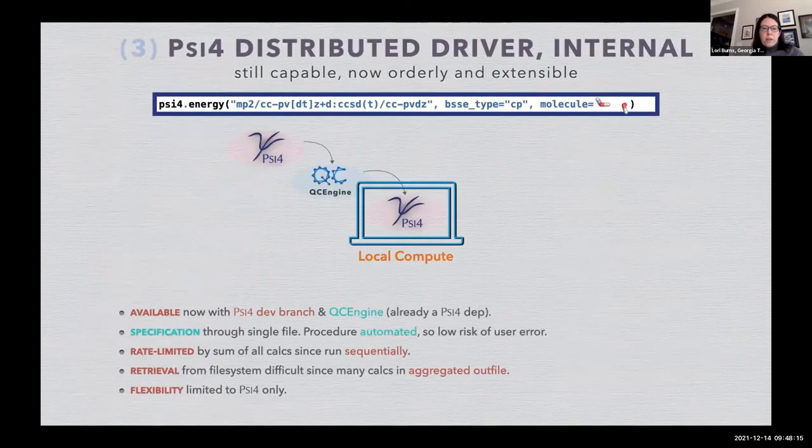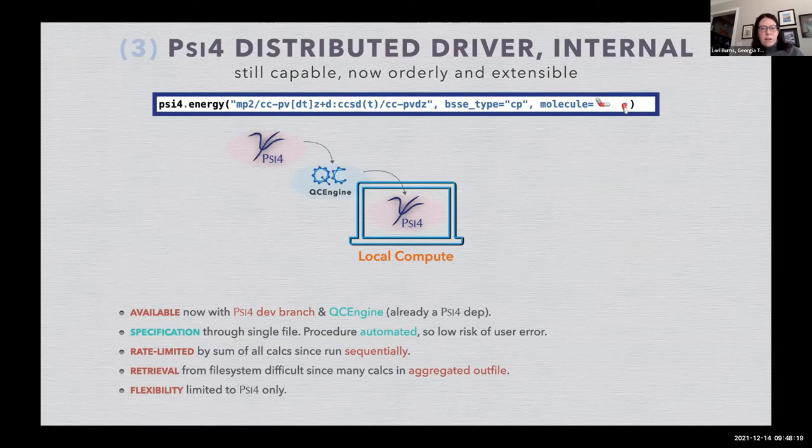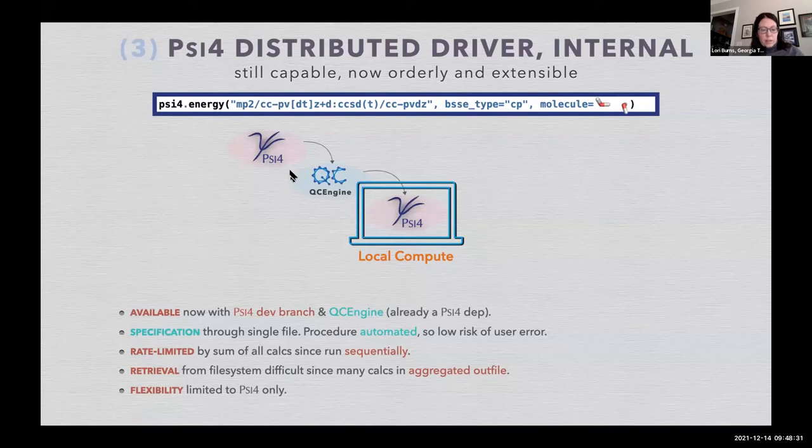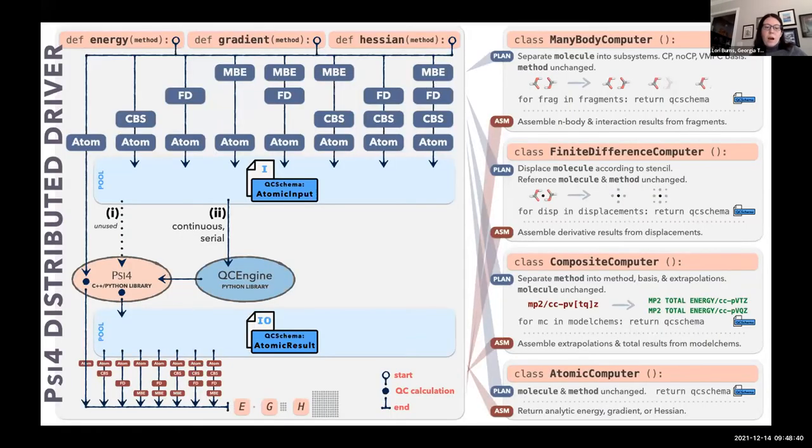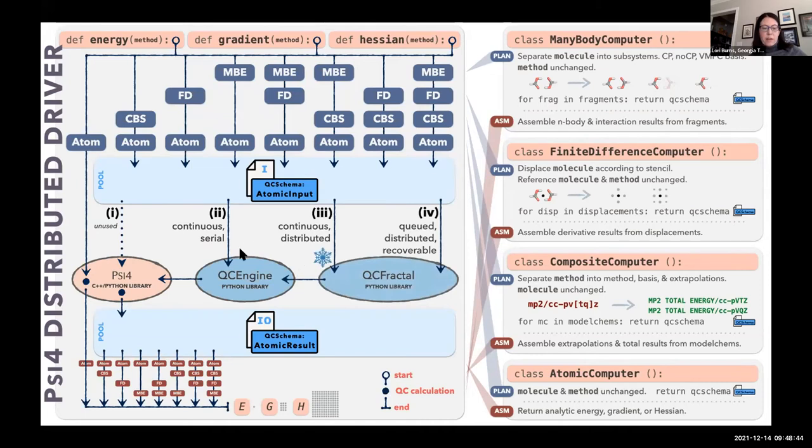With these in place, we have the third method of running our sample calculations, which is with the Psi4 distributed driver. This is now far more orderly and we can extend it. Same input as before, only with Psi4 calling QC Engine calling Psi4 again. This is automated, but we still have all of these limitations as before. That can be remedied somewhat by instead of running through QC Engine, running through QC Fractal, which is another portion of the QCArchive stack responsible for distributed computing.